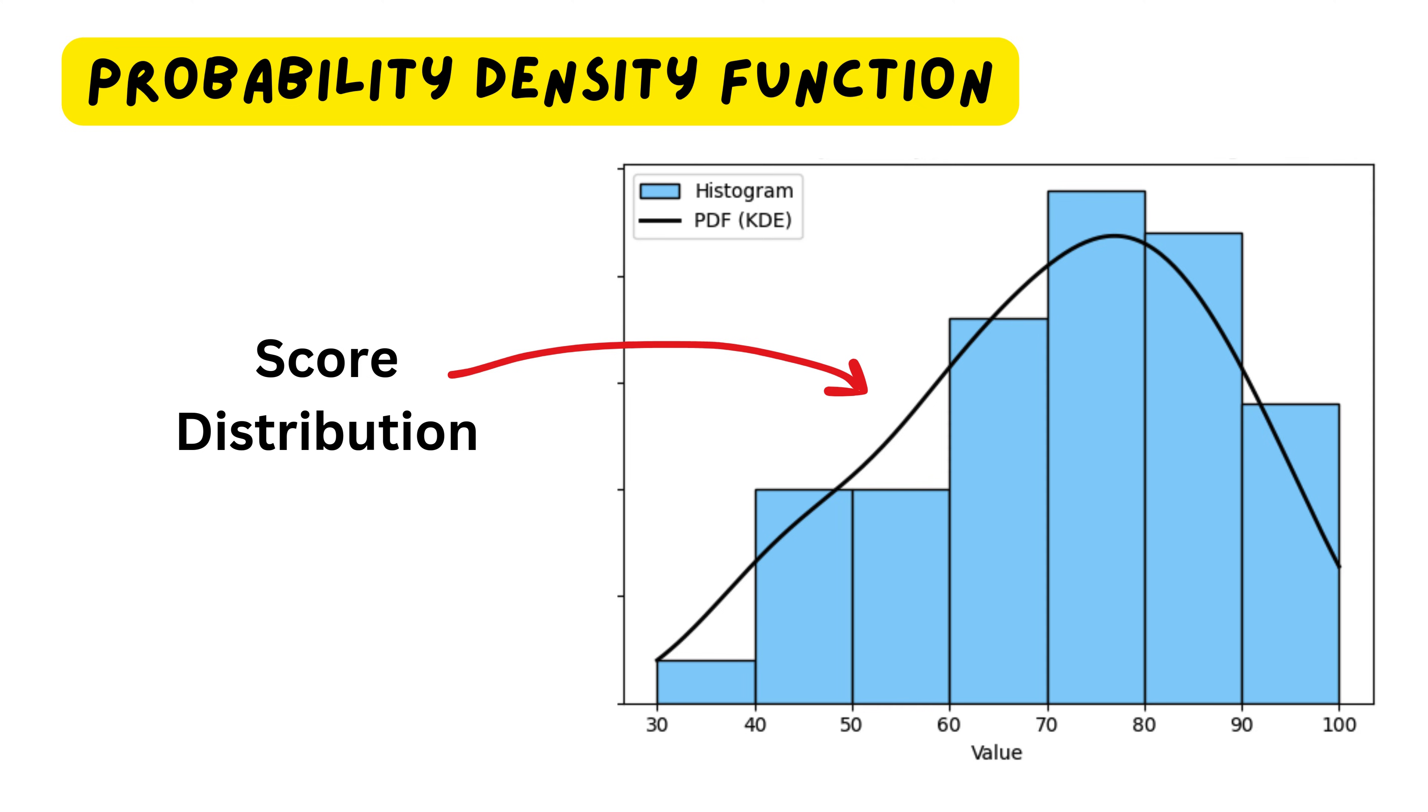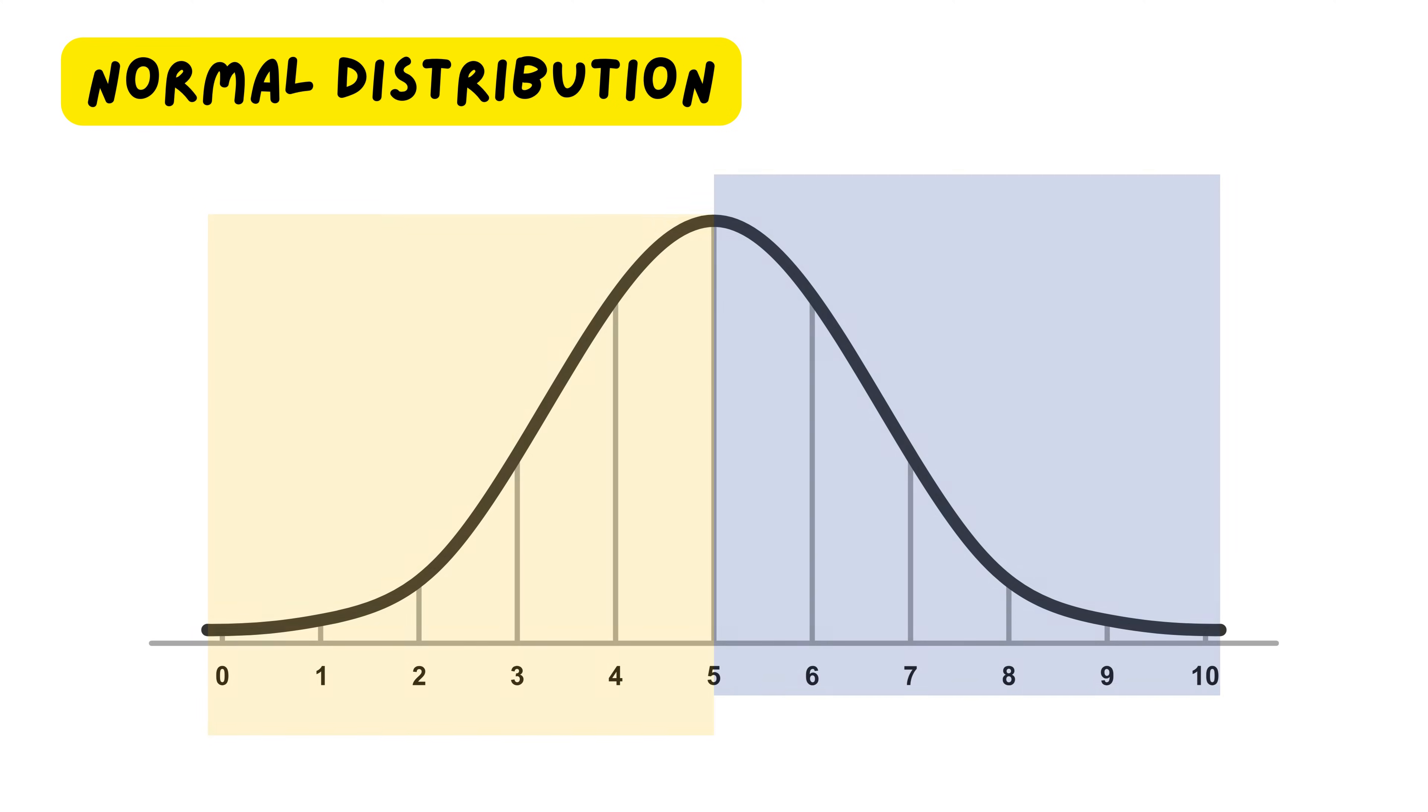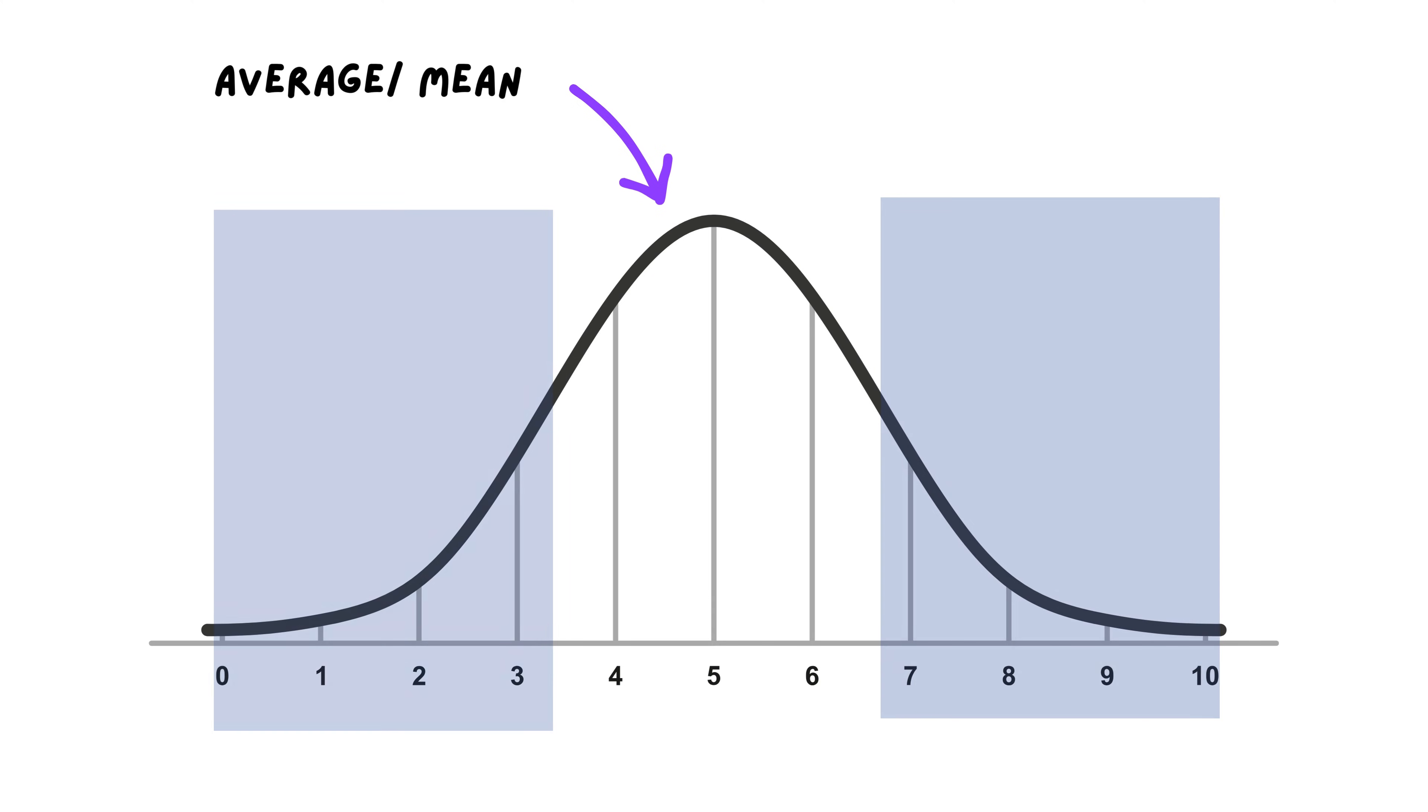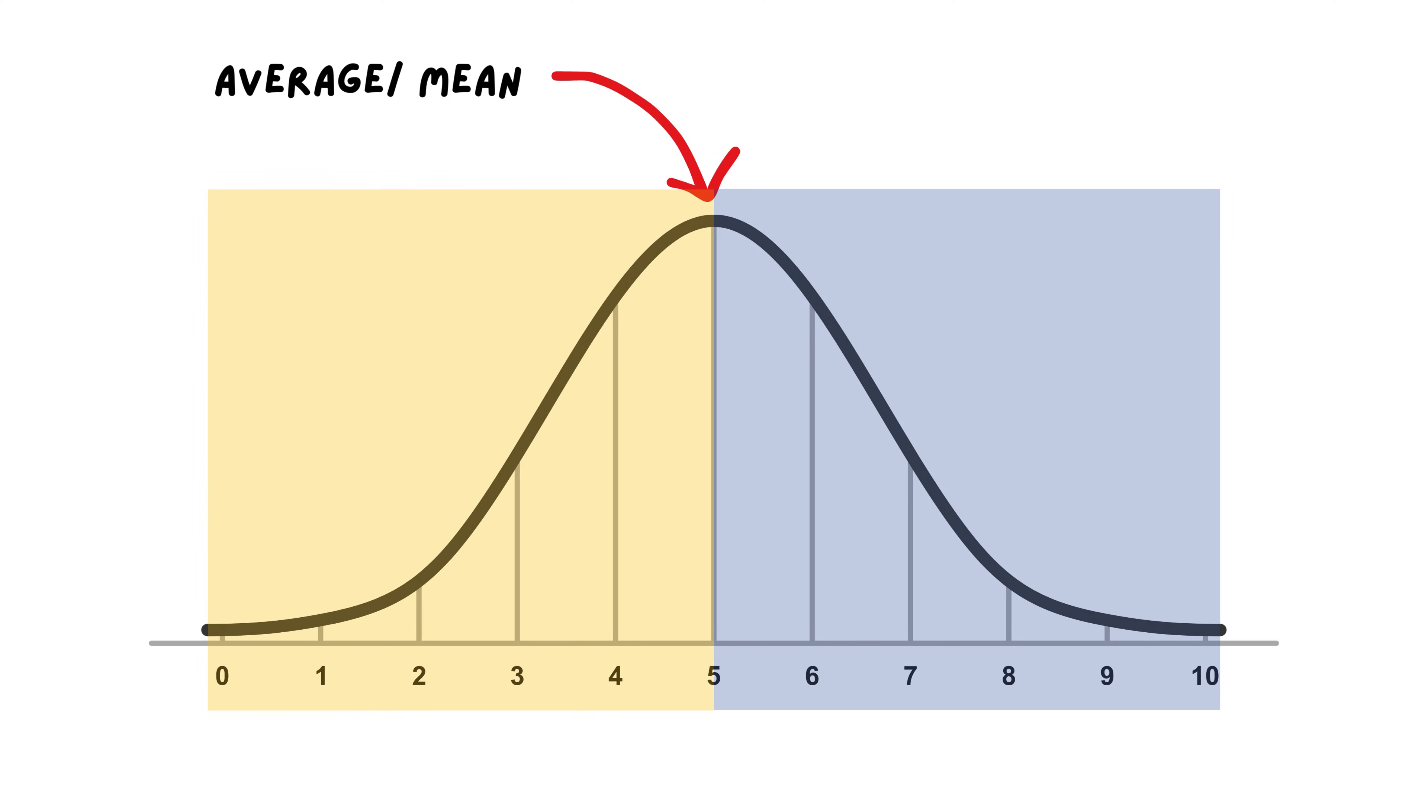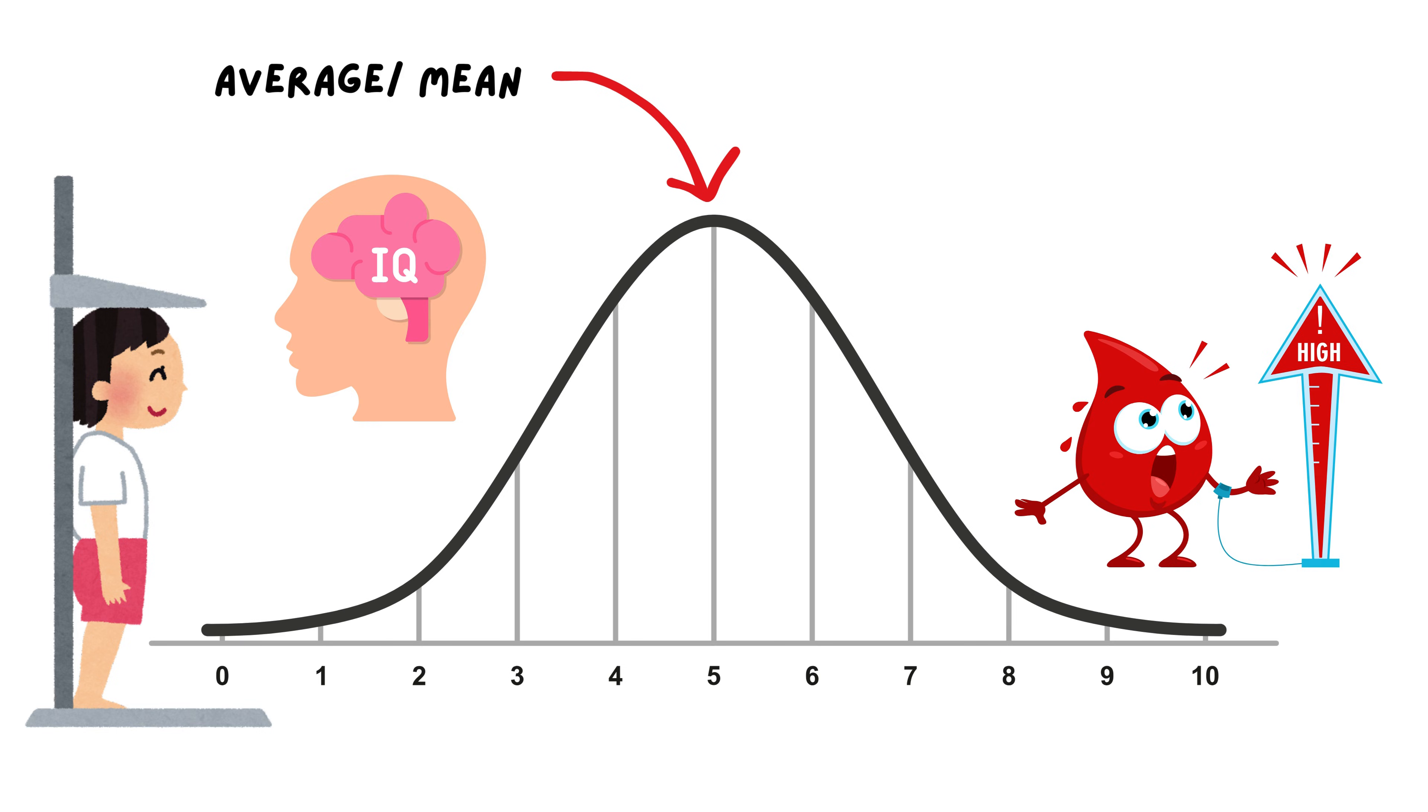When we plot the PDF of our histogram, it is represented as a smooth curve instead of bars, forming a bell-shaped pattern. This shape is called the normal distribution. Even though our actual data might not be perfectly symmetrical, we can assume it to be approximately normal because it follows the general pattern where most students score around the middle and fewer students score very high or very low. The normal distribution has two key properties. First, it is centered around the mean, the average score of the class. Second, it is symmetric, meaning the number of students scoring below 71 is roughly equal to those scoring above it. This pattern is not unique to just our class. It appears everywhere in nature and real life. Heights of people, IQ scores, blood pressure levels, and even certain economic trends tend to follow this same bell curve pattern.